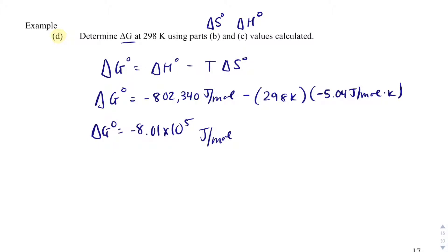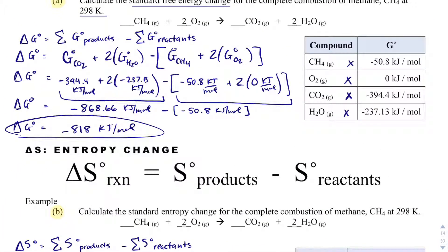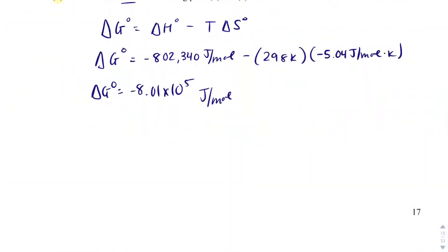And if I compare that, negative 8.01 times 10 to the 5th, for my delta G, I had gotten 8.18 times 10 to the 5th, and that's in joules per mole. And so with that, I say that that's pretty close. So I think we've done it pretty good.